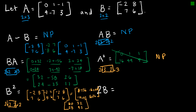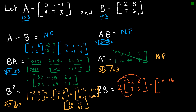The last part is 2B, which is called scalar multiplication — I'm taking B and just doubling all of the terms. So that gives me [−4, 16; 14, 12]. It's essentially like distributing the 2 across every element.